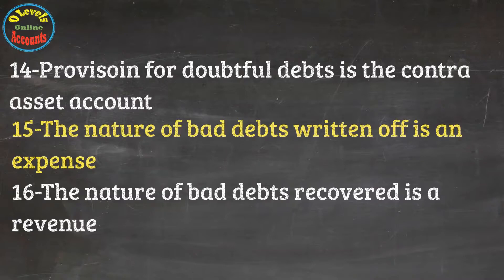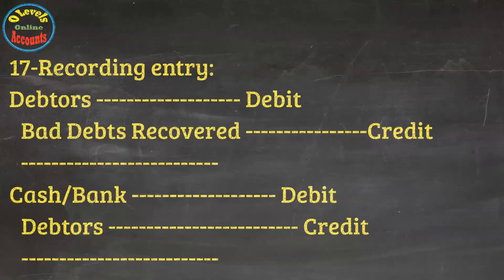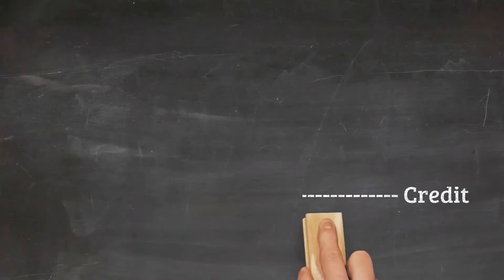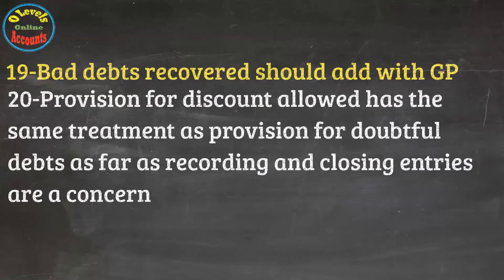Bad debts recovered is revenue in nature. Its recording has two steps: it should be closed with the profit and loss account, and it should be added with gross profit.